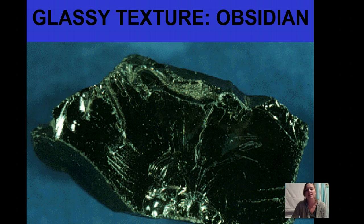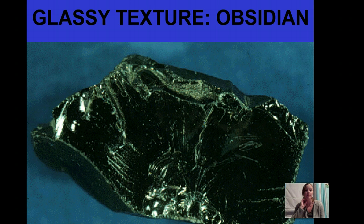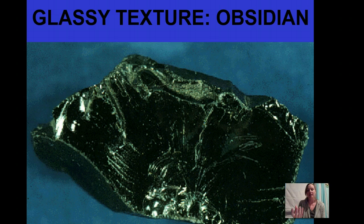I wanted to get to this slide because this is the glassy texture example known as obsidian, and it really just looks like black glass. We're going to show it to you in class, but what you'll see is there are absolutely no distinct crystals. There are minerals in it — it's not just one crystal mineral — it's a series of many minerals, but it creates this black glassy texture because it formed so quickly and the lava hardened so fast that it didn't have time to grow other crystals.